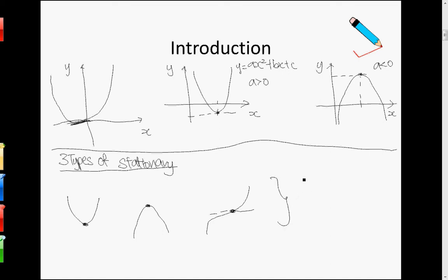So how we actually define this is when at this point, the gradient is actually 0. Gradient equals 0 for the stationary point.